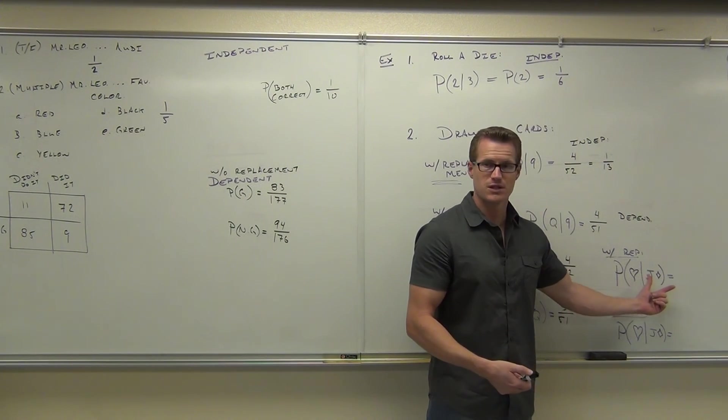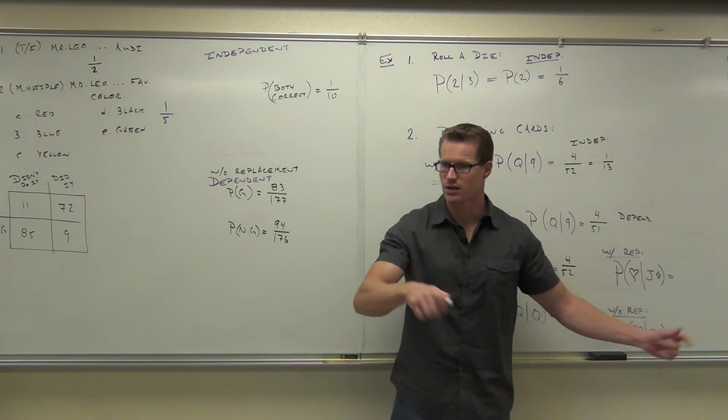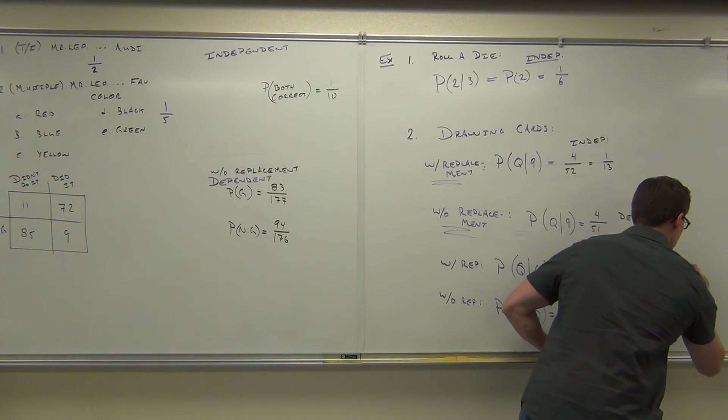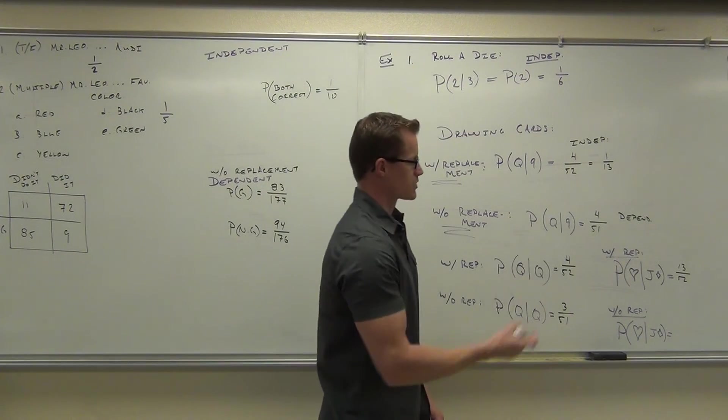13 over 52. You've replaced that card. Good. There's 13 hearts out of 52 cards because you put that jack back.